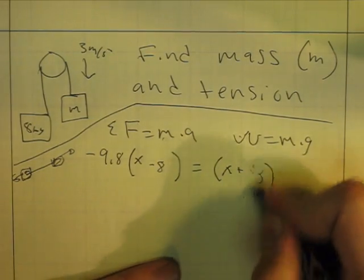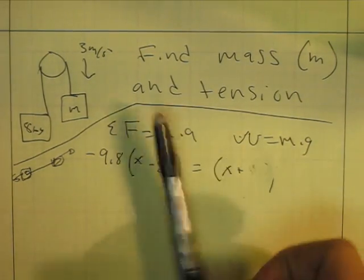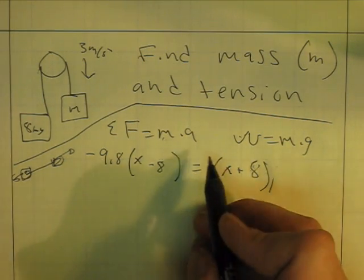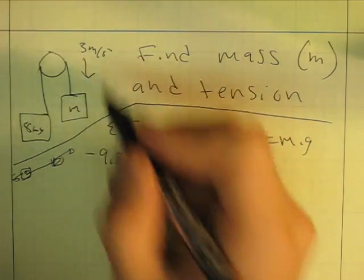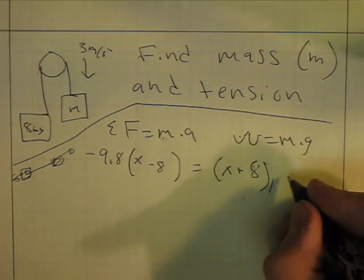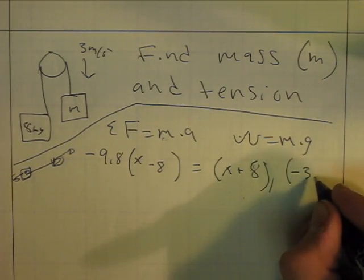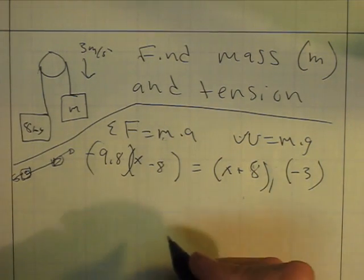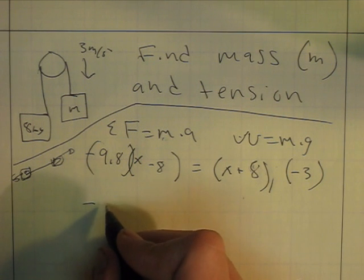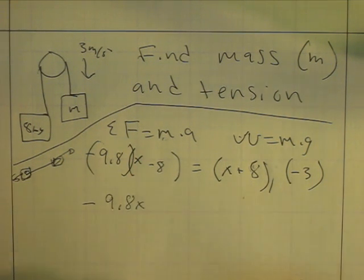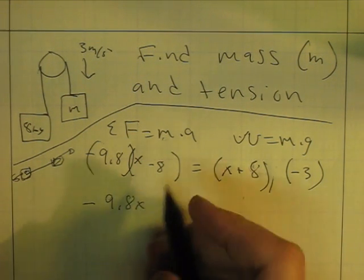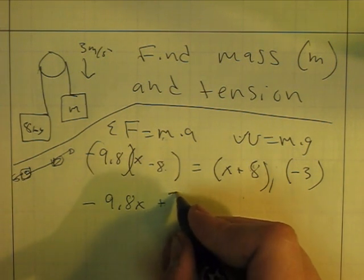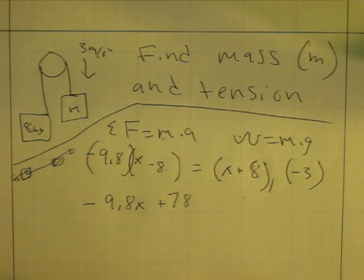Okay, that is a terrible 8. I don't even know what that was. x plus 8, and now I'm going to multiply it by our acceleration. Remember again, our acceleration is going downwards so it's going to be negative 3. And to do more simplifying, it's just going to be negative 9.8 times x is negative 9.8x, and then add 8 times a 9.8 is 78 with two significant figures.